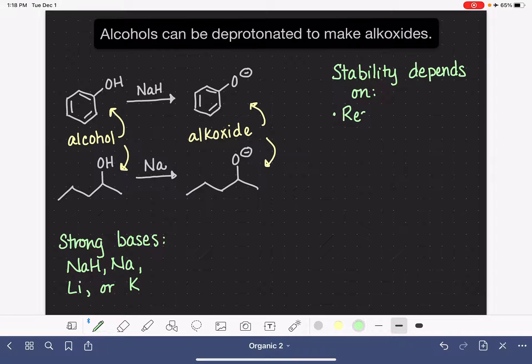So they will all have the exact same atom with a negative formal charge, which means we jump right straight to variable number two, which is resonance. R for resonance. The more resonance structures you have, the more stable the alkoxide is.